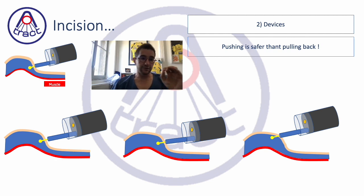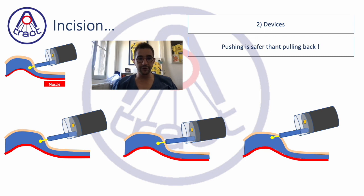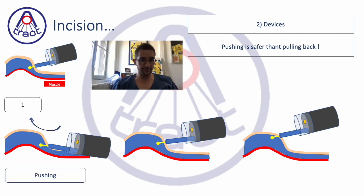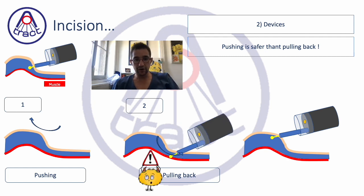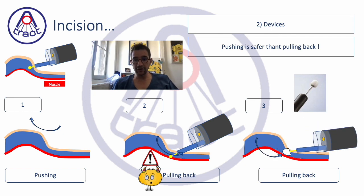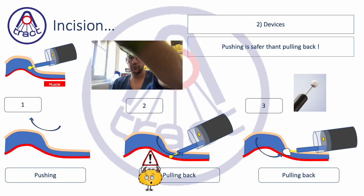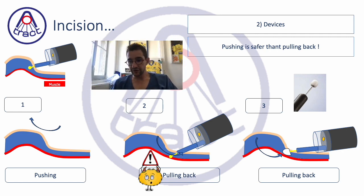The two device categories are needle-type and isolated tip knives. It is important to distinguish them because pushing is safer than pulling back. If you push, your scope and knife go in the opposite direction of the muscle. If you pull back, your knife goes toward the muscle — so pulling is dangerous. That is why, instead of needle-type devices, isolated tip devices like the IT knife were developed. With the IT knife, you can pull back because when you pull, you go toward the muscle but there is a ceramic tip on the knife that protects and will not damage the muscle.